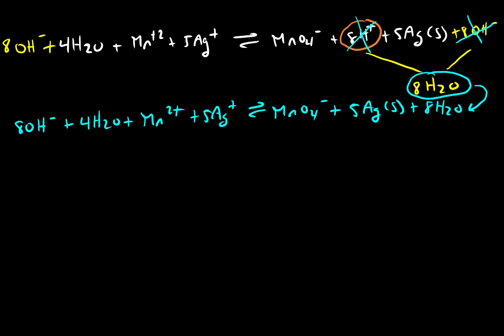So this is our new reaction, but it's not simplified at this point. Because what we can note is that on my reactant side, I have four waters. On my product side, I have eight waters. So we can cancel out four waters from each side, giving us four waters as a product instead of waters being on both sides.